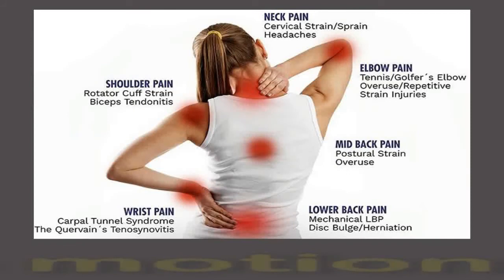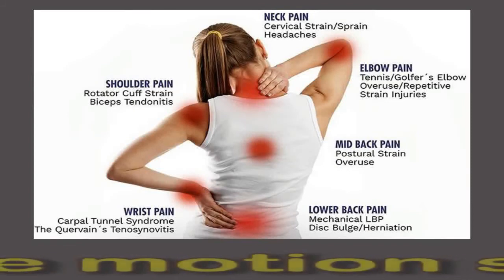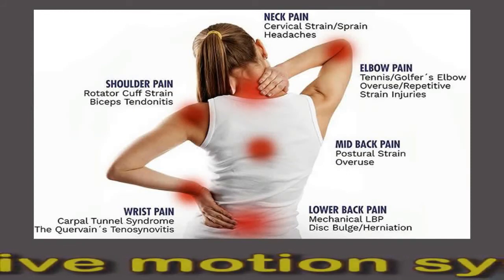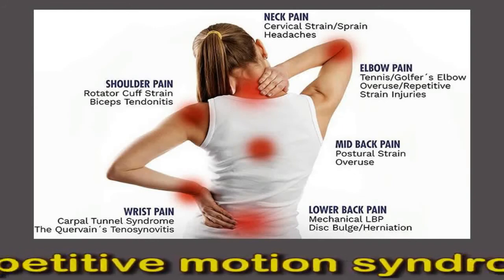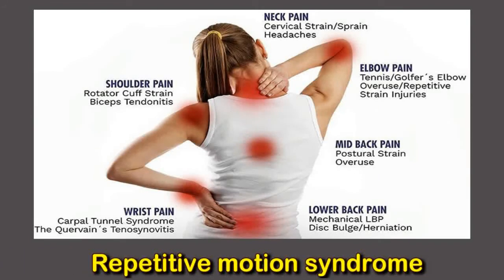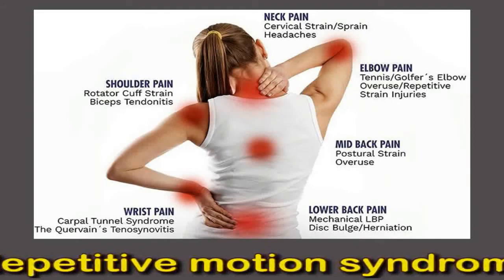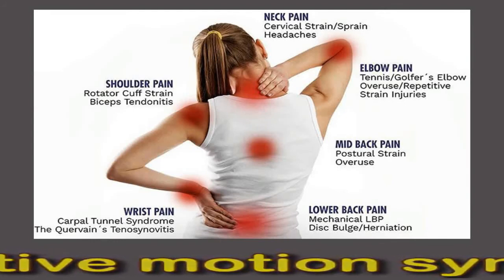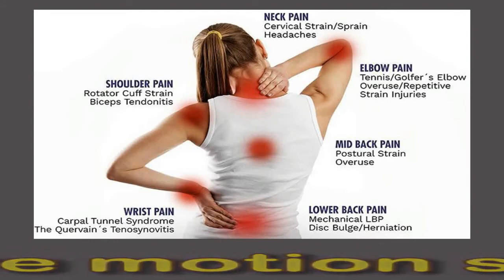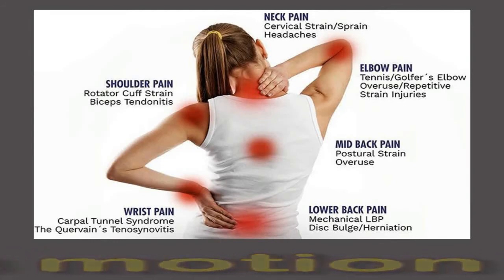As the name suggests, repetitive motion syndrome occurs from repeating a task over and over again, such as typing or knitting. Overworking the joint can cause it to swell, putting pressure on the surrounding nerves. It can affect many joints in the body, including the wrist.